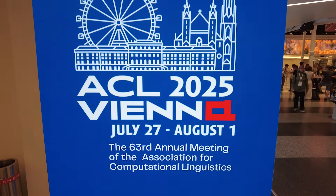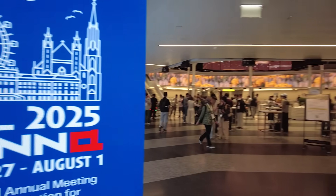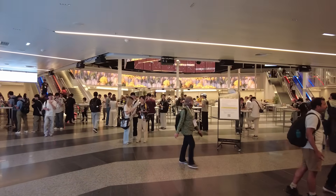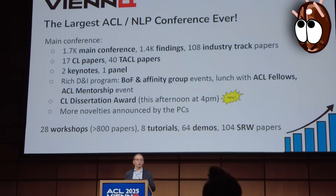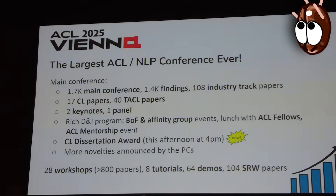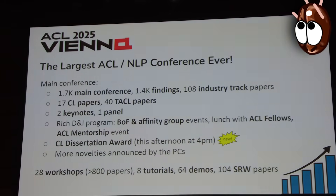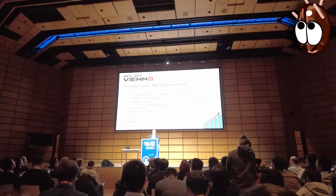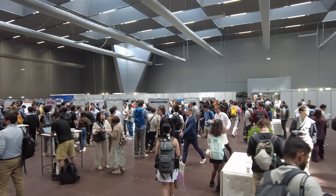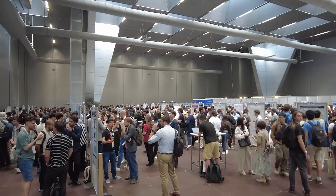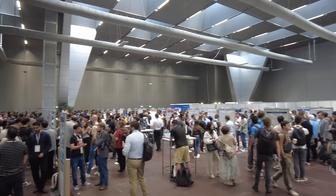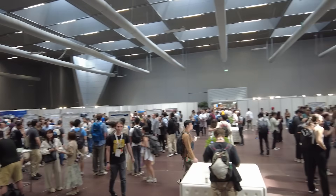Hello everyone! In this video, I'll give you a quick snapshot of ACL 2025, which took place this year in Vienna. ACL is the world's largest natural language processing conference, featuring more than 2000 papers. The program was packed with keynotes, oral talks, poster sessions and plenty of social events. I'll share one sample of the many interesting poster presentations along with an interview of one of the authors whose work on multilingual LLMs caught my attention. Enjoy!